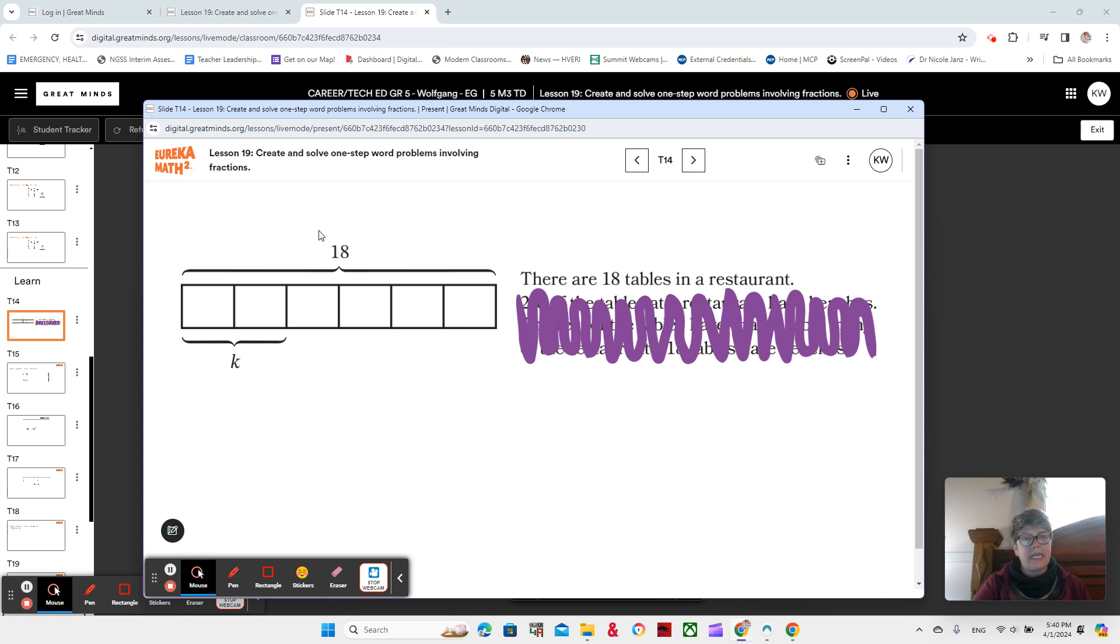We see the 18 here, so that must be the tables in the restaurant. And then we see K, that's our unknown number. And how many parts is 18 broken into? 1, 2, 3, 4, 5, 6.